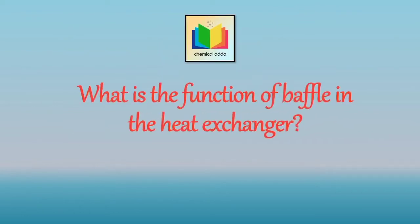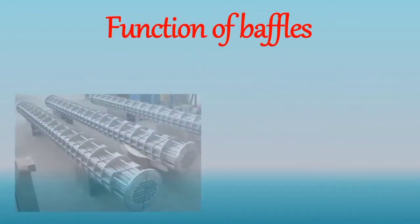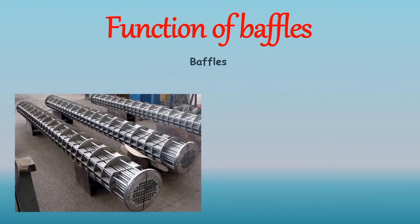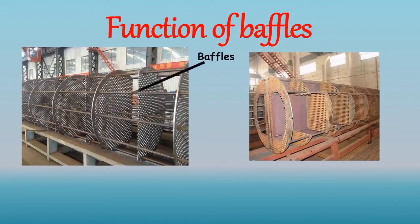So as we know, the function of a baffle in the heat exchanger: baffle is used to support tubes in the heat exchanger, which reduces mechanical vibration and leakages and failures near the tube sheet. It also enhances heat transfer by directing the flow through the shell in the desired pattern, which increases turbulence and reduces the stagnant area in the heat exchanger.